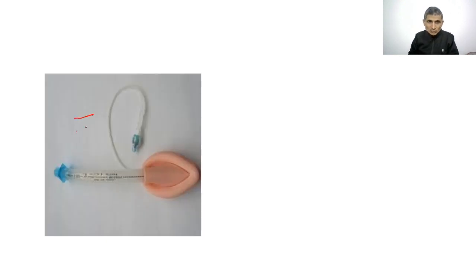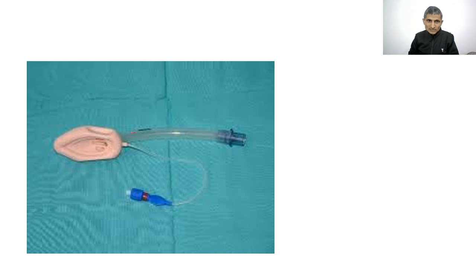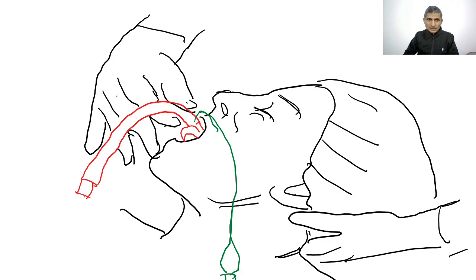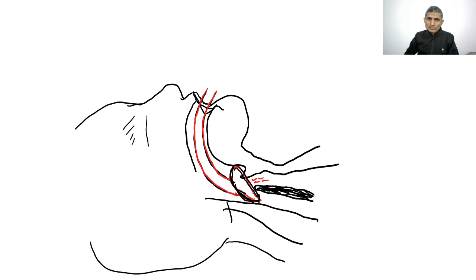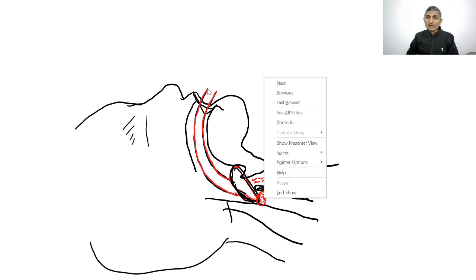This is a laryngeal mask airway (LMA). It consists of an airway tube and an inflatable cuff with an inflation tube. It is inserted blindly along the hard palate. After proper positioning, the tip of the LMA resides over the upper opening of the esophagus, and gases are delivered into the airway.